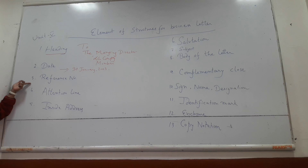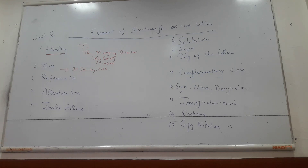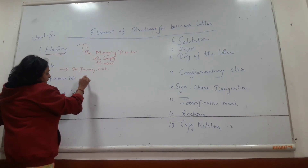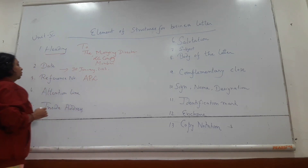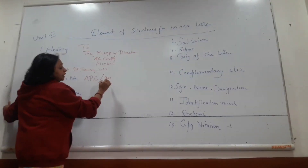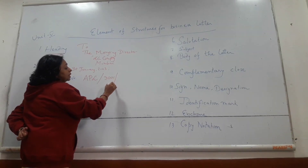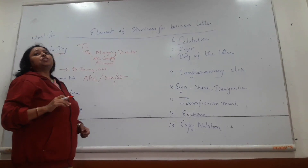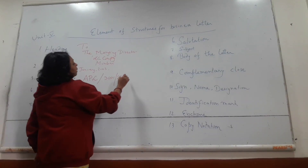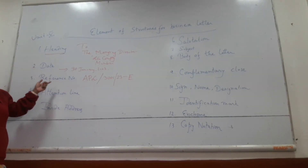Coming to the third point, that is called the reference number. What is reference number? Reference number is used for future purpose. Whenever we are writing a business letter, the reference number will be written in this way: suppose the name of my company is Ankit Private Limited, so we write A for Ankit, P for Private, and L for Limited. So the reference number will be written as APL slash 30/01/23, and if it is an inquiry letter, we write 'IN.' This is the way for writing a reference number.